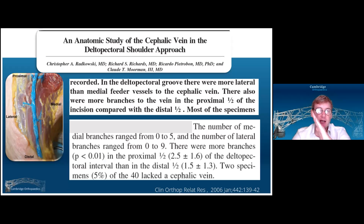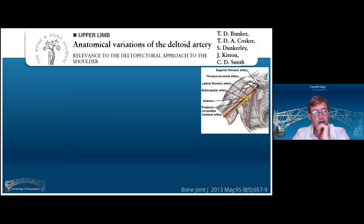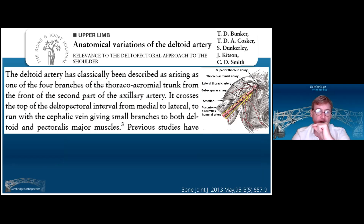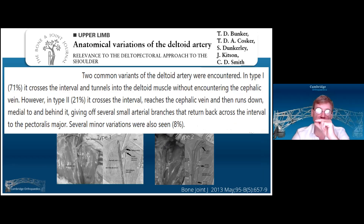The cephalic vein — traditionalists would take the cephalic vein lateral, because it drains deltoid and there are more venous branches lateral, but it's not 100%; there are still branches medial as well. You also need to bear in mind the deltoid branch of the thoracoacromial artery, which comes in two different forms. There's a branch which comes across under the cephalic vein and then goes into deltoid — that's quite easily dealt with. When you see it as a discrete neurovascular bundle, you can tie that off or cauterize it.